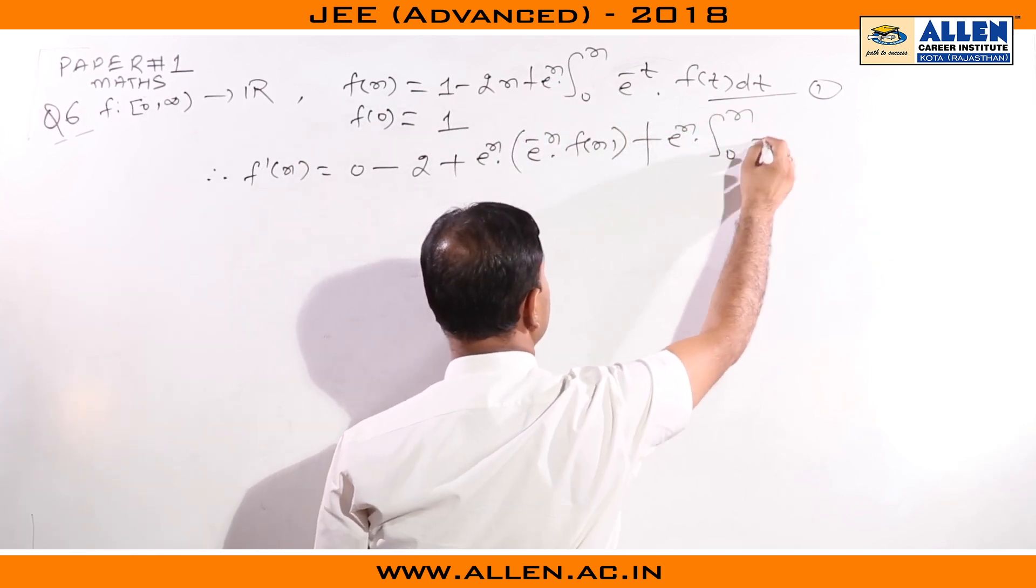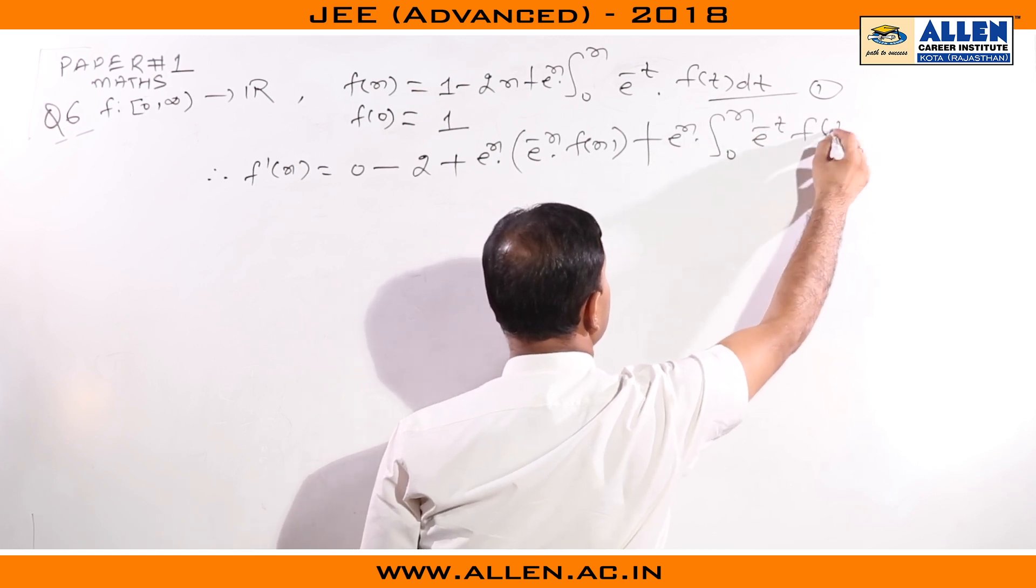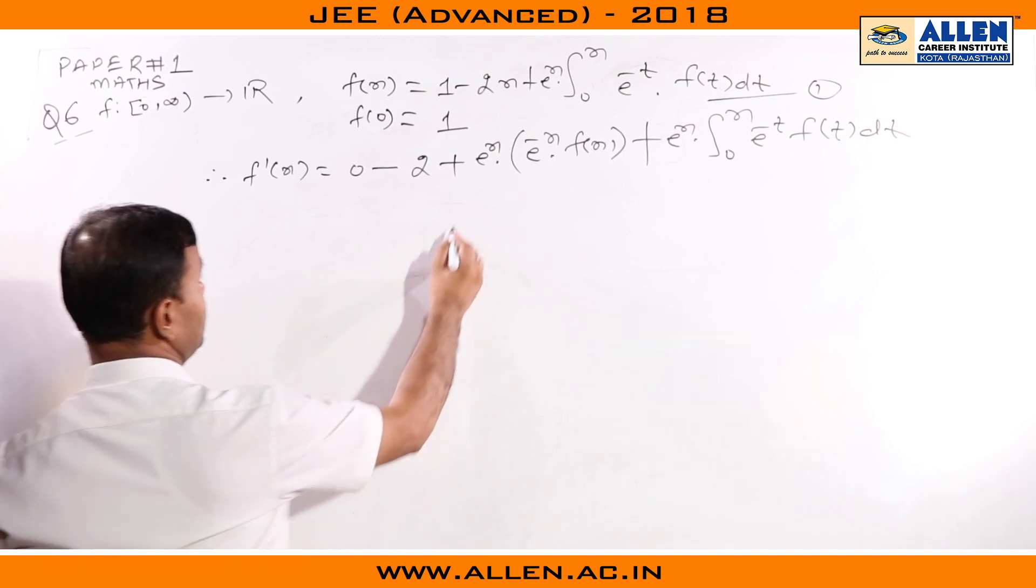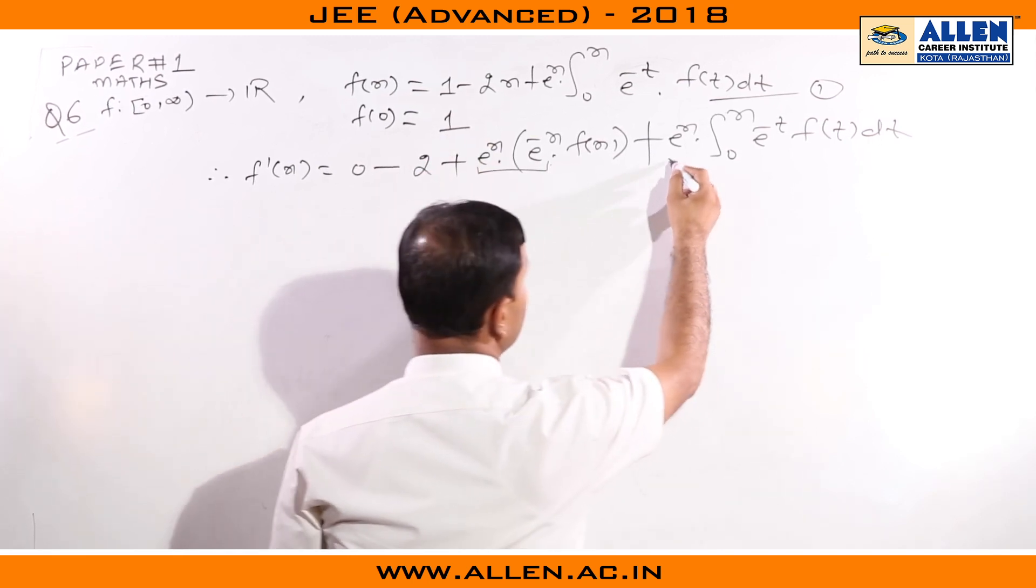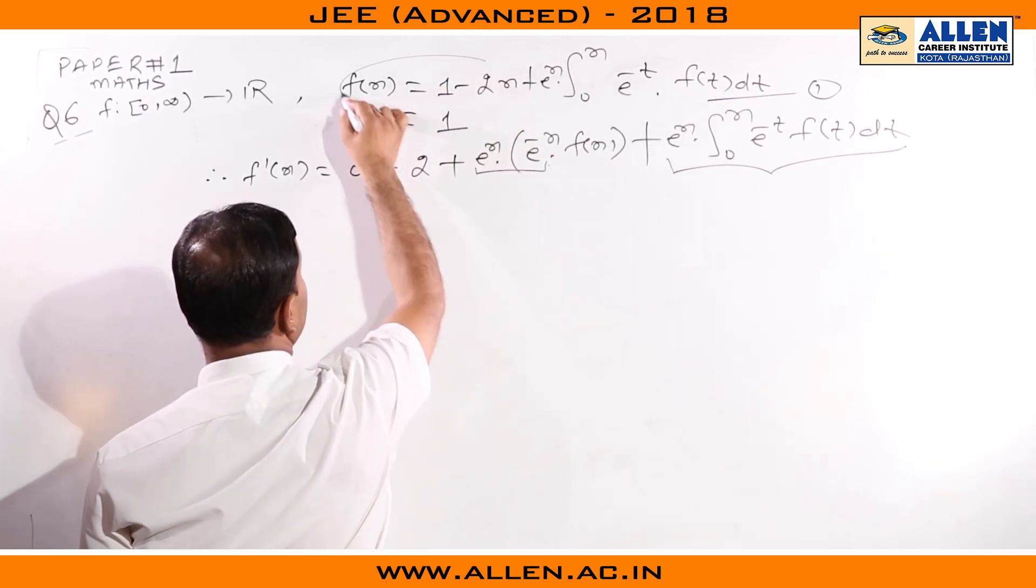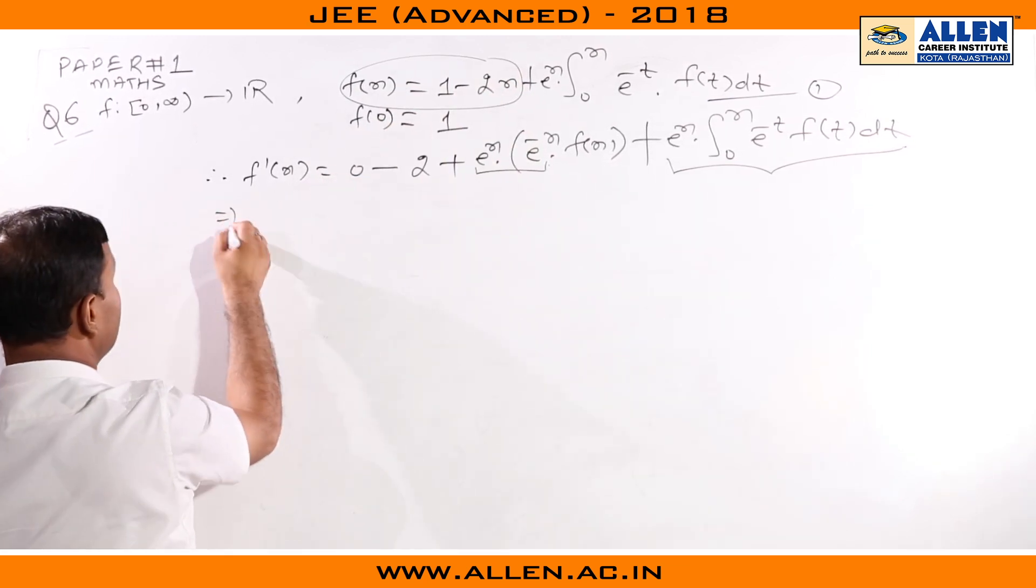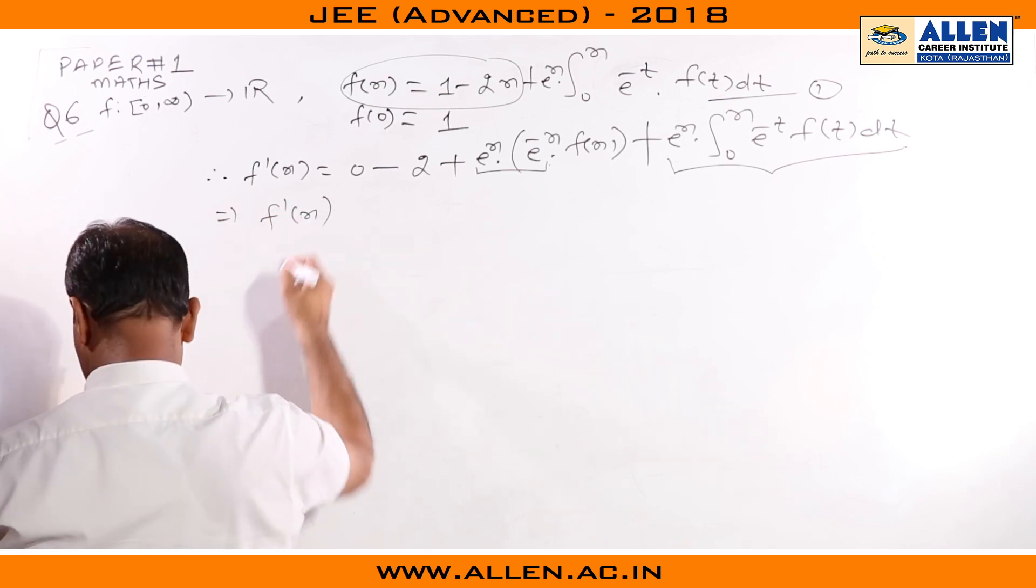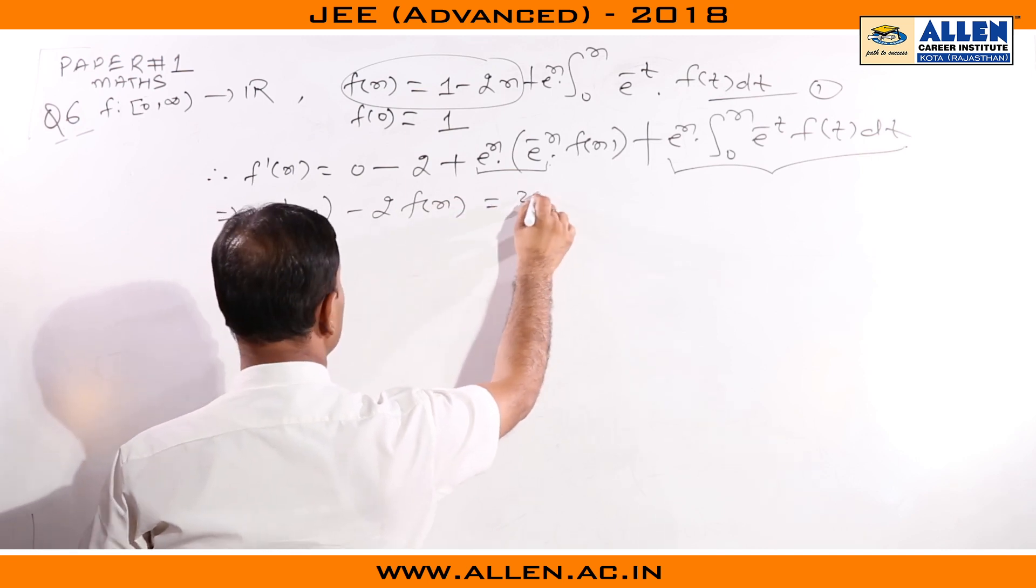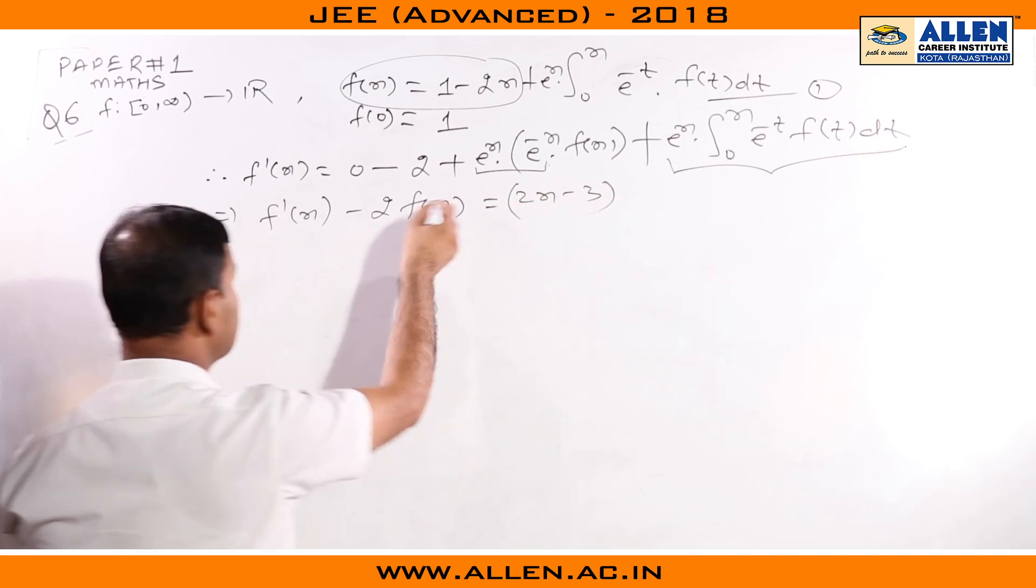On further solving, this becomes 1 and we can use this result directly. So we get finally f'(x) - 2f(x) = 2x - 3, which is a linear differential equation.